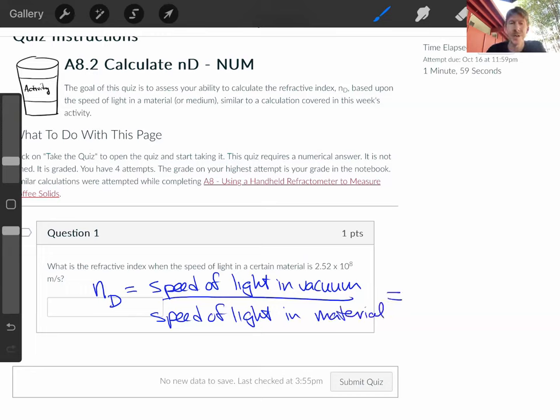And we know that the speed of light in a vacuum, at least as we approximate it, is going to be 3.00 times 10 to the eighth. And those are in units of meters per second.